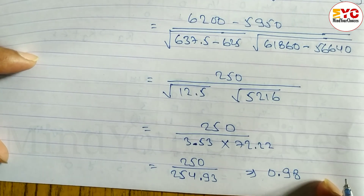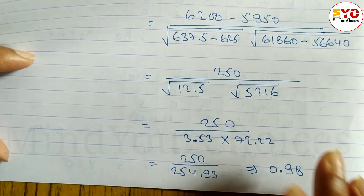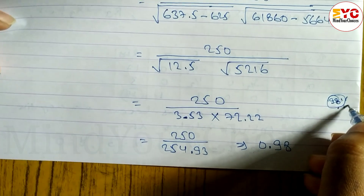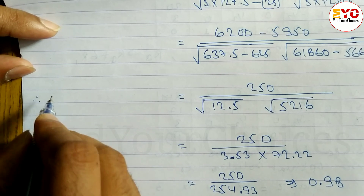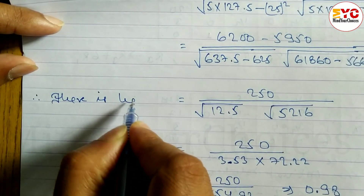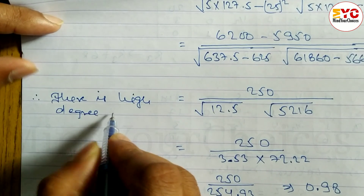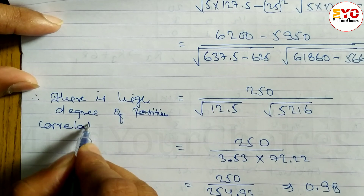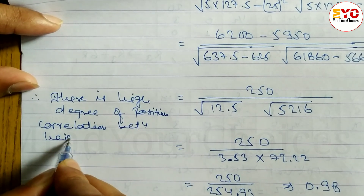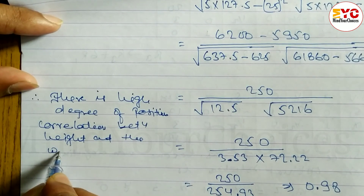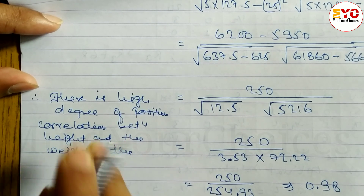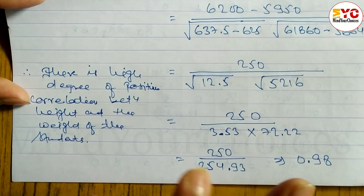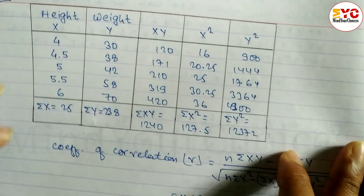The result is r = 0.98, which represents 98 percent. This means there is a high degree of positive correlation between height and weight of the students. This interpretation will score you 5 marks.